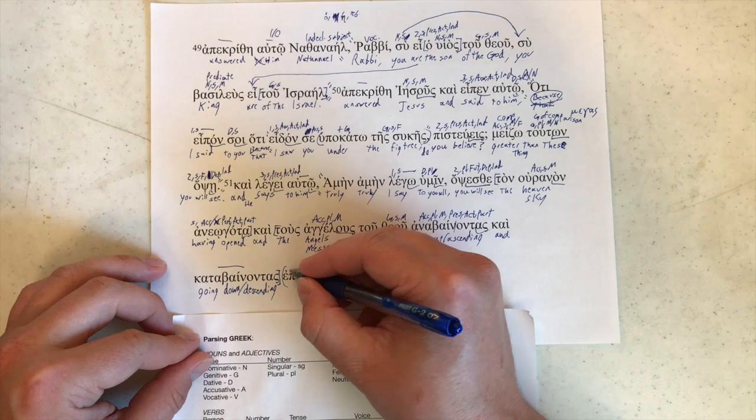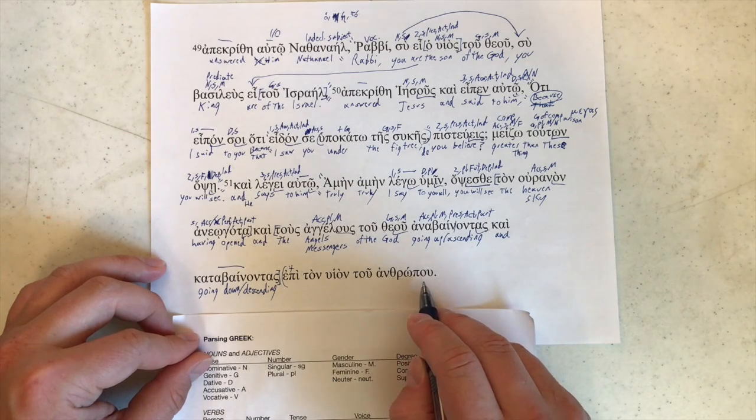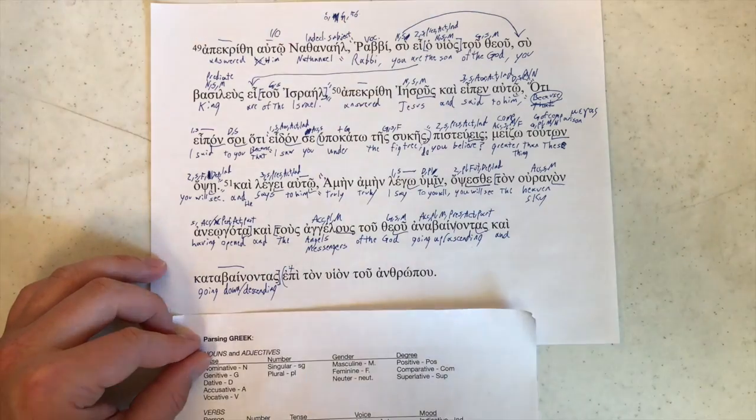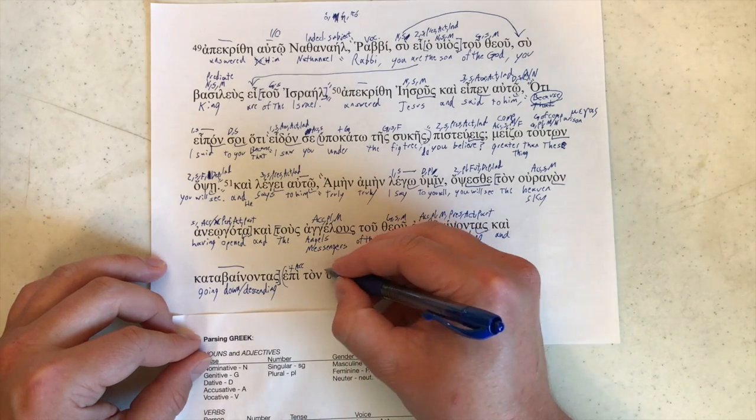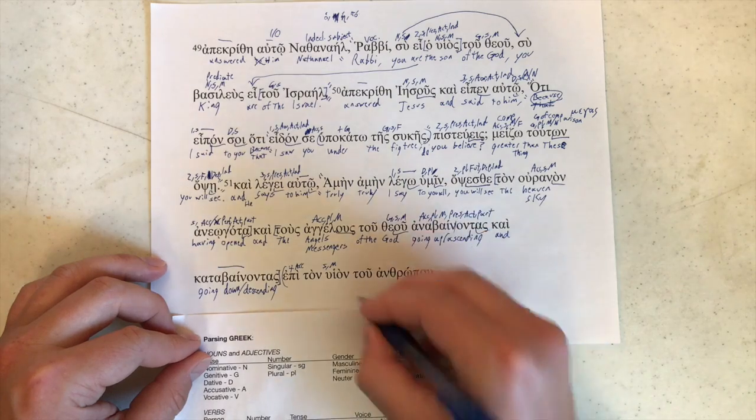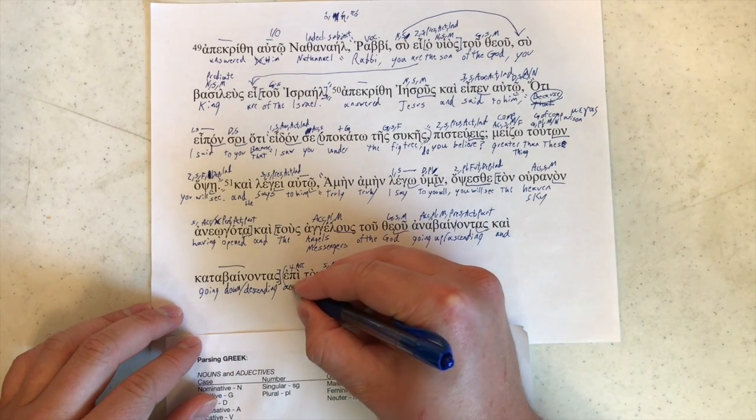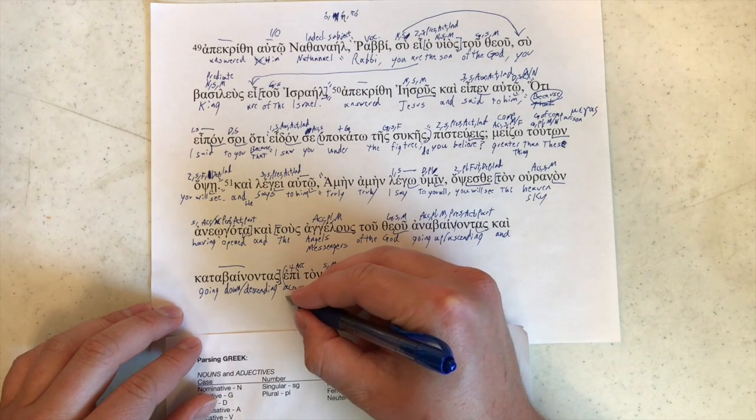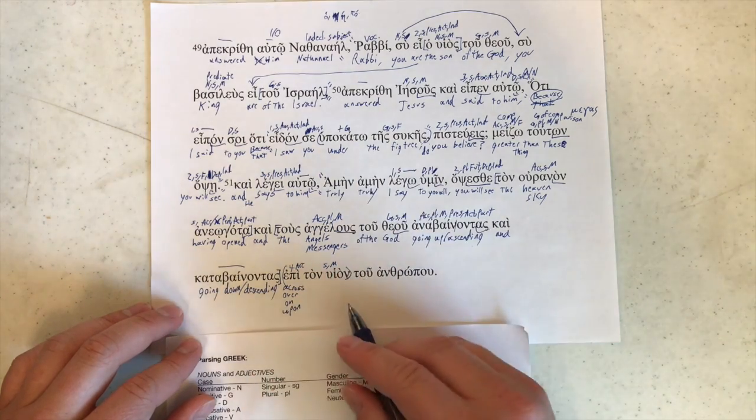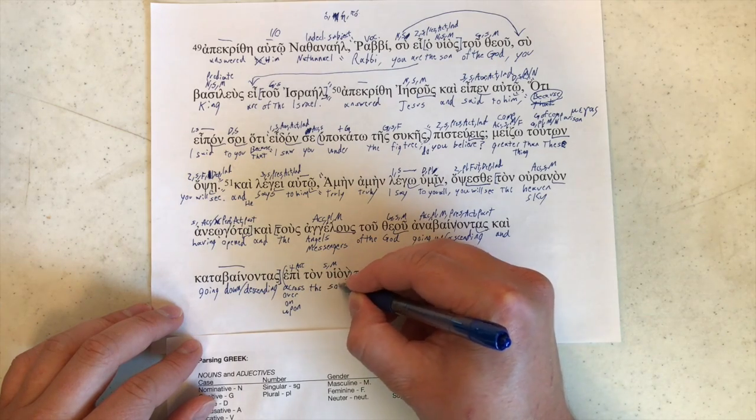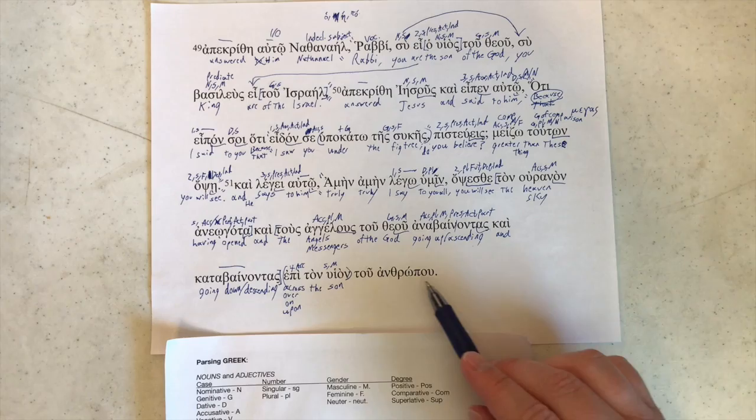Epi is a preposition. In this case, it looks like it's taking ton huion, either accusative or technically genitive. But we wouldn't have an accusative separating a preposition from its object. So that's not probable. Accusative has to be the option. Ton huion is going to be singular and masculine. And then it ends right here. And then we have a couple of different options for translating. Epi could be across. Epi could be over. Epi could be on, or it could be upon. So we want to try each of these and see which one sounds the best, makes the most sense in context.